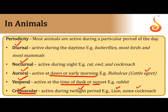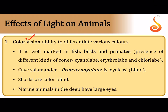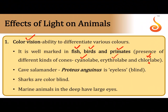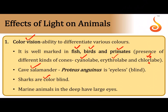Animals have the ability to detect light and color through pigments in the retina — well marked in fish, birds, and primates. Cones include cyanolabe (sensitive to blue light), erythrolabe (sensitive to red light), and chlorolabe (sensitive to green light). Some animals are completely blind — the cave salamander has adapted to blindness; sharks are color blind, seeing only black and white. Marine animals living in deep waters have larger eyes to pick up faint light signals.